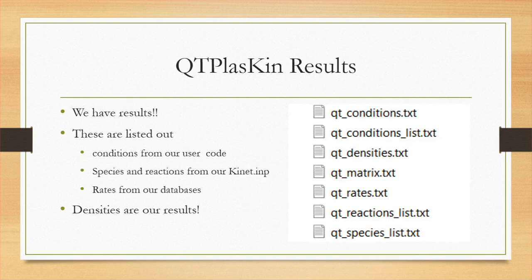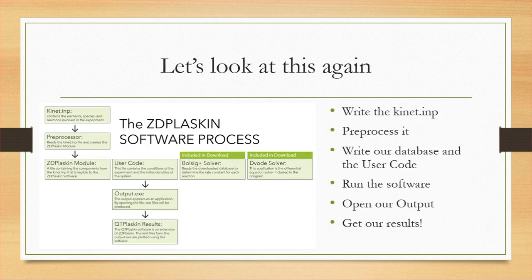With that, we have walked through each component of the ZD Plaskin process. Here's how they all work together: first, write your Connect.INP and pre-process it to create the ZD Plaskin module. The Connect.INP will tell you what needs to be included in your BULSIG database. The user code contains all the experiments and environment settings you wish to test. The software then uses the ZD Plaskin module, the user code, the database, and the kinetics equation solver — all at the same time — to create our output in a matter of seconds. Once the output is created, we move to QT Plaskin results, which is what we use to plot our data.